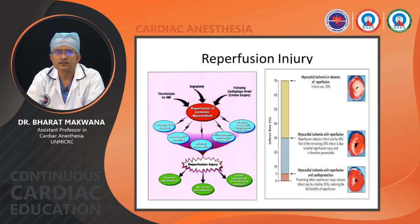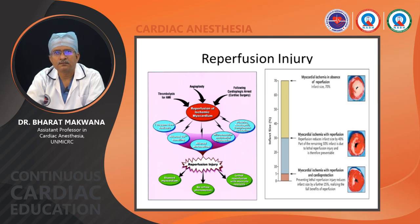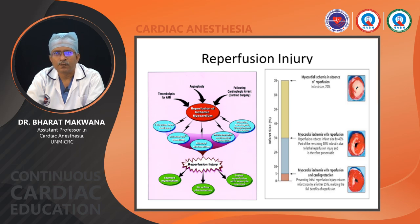This slide shows that in the absence of reperfusion, 70% of myocardium is lost. With reperfusion, 40% of myocardium is saved and 30% is lost. If we add cardioprotective measures — handling oxygen free radicals, managing metabolism, shifting the heart to aerobic metabolism, improving oxygen delivery, reducing free radical damage, and giving adenosine — we can reduce infarct size to approximately 25%.